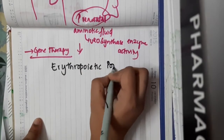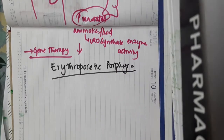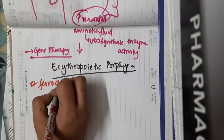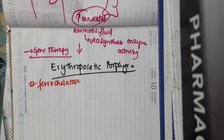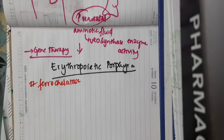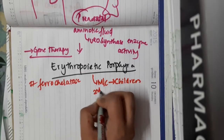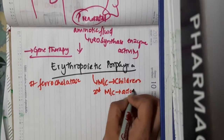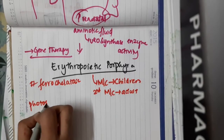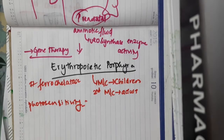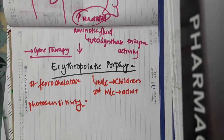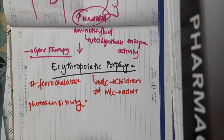Erythropoietic protoporphyria occurs due to the deficiency of the enzyme ferrochelatase. It is the most common porphyria seen in children and the second most common porphyria seen in adults. The patient suffers from photosensitivity, which occurs after exposure to even a minimal amount of sunlight. Just after minimal sunlight exposure, pain, swelling, and redness are seen. Vascular lesions are uncommon in erythropoietic protoporphyria.